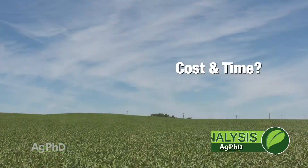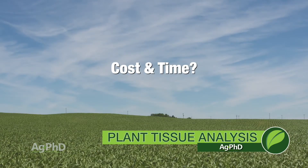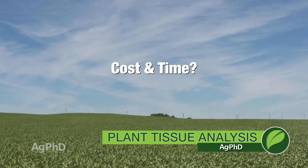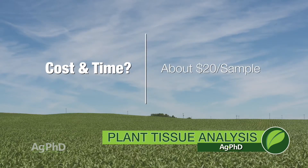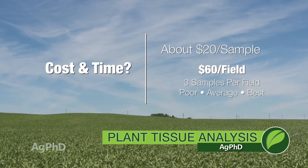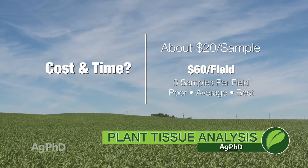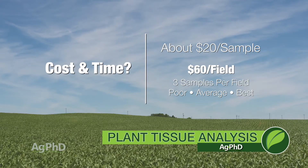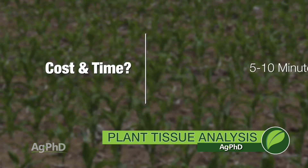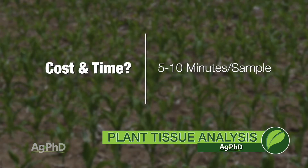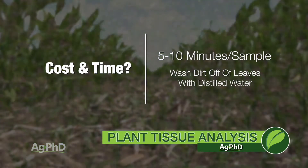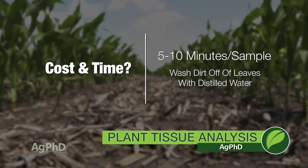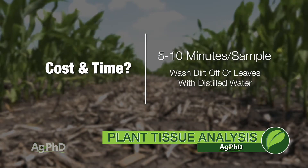The downside is cost and time. It costs roughly $20 per sample for tissue tests, so if you're sending in three samples that's about $60 — really not that bad. Make sure you're asking for a complete analysis so you get micronutrients and the whole works. Time-wise, it takes about five minutes to pull a plant tissue test, so three spots is 15 minutes a week — maybe a bit more when the plant is small or if there's dirt splashed on the leaves that needs washing off with distilled water. Still only about ten minutes.